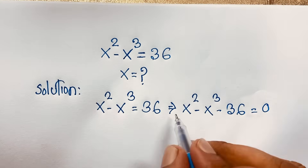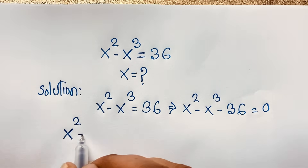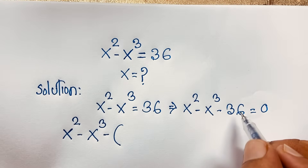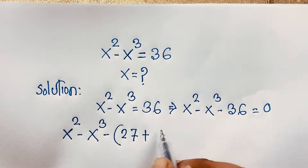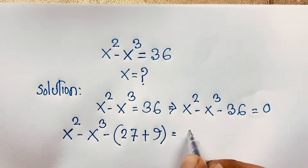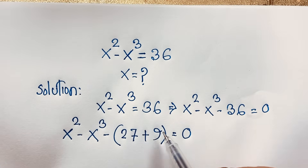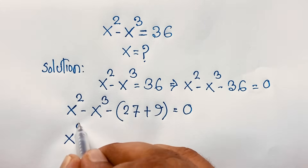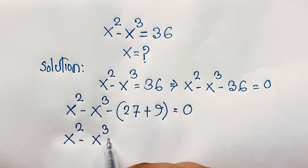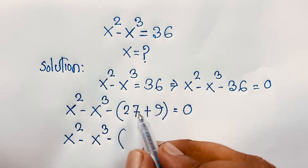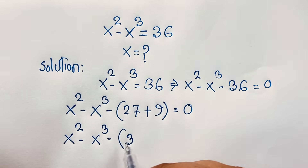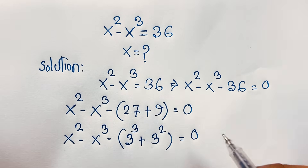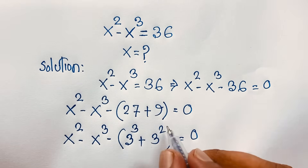You can see this expression: x to the power 2 minus x to the power 3 minus 36. We can write 36 as 27 plus 9, where 27 plus 9 equals 36. Now here, 27 can be written as 3 to the power 3, and 9 is 3 to the power 2.